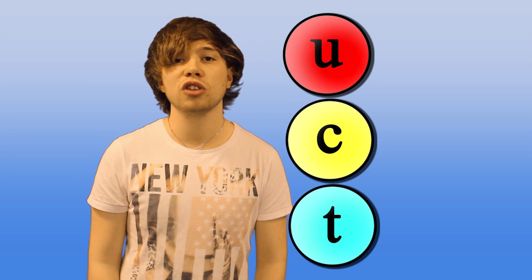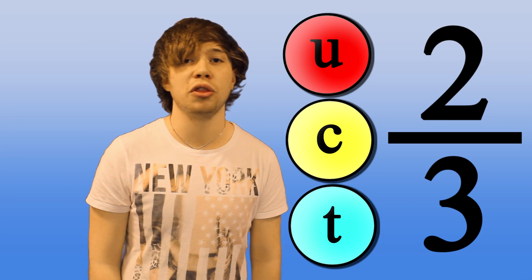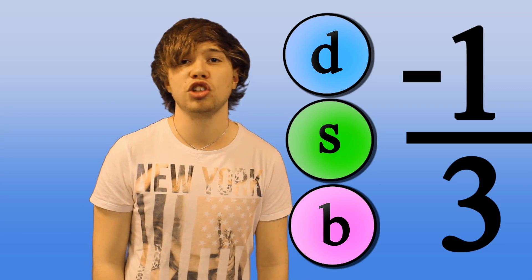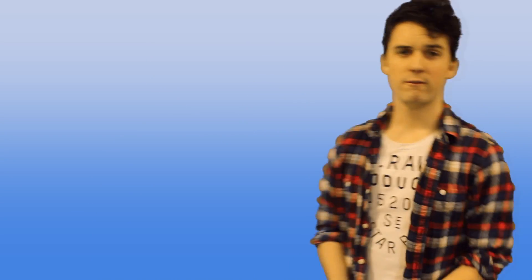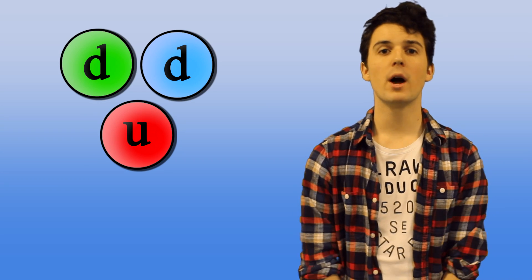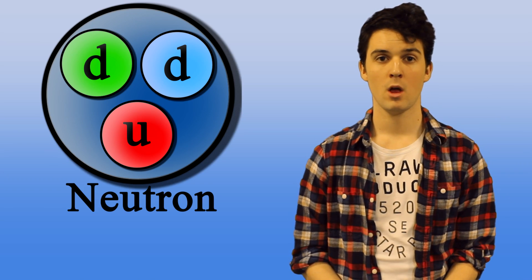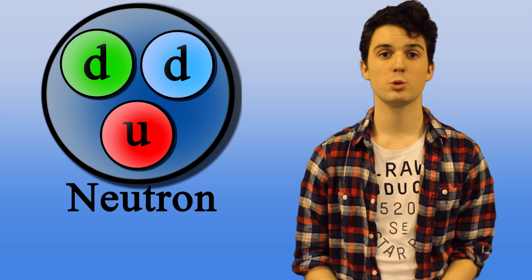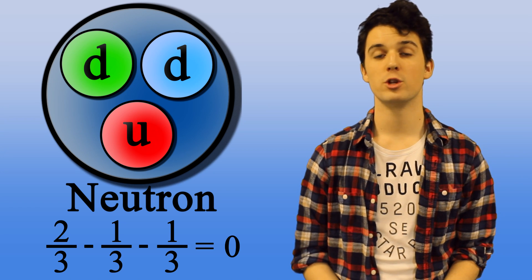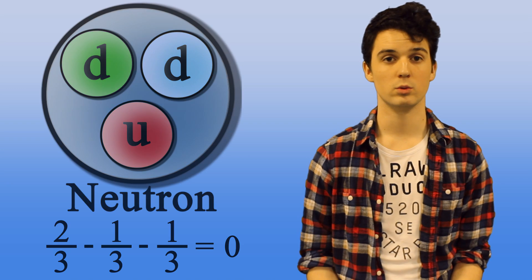One of the properties of a quark is its charge. Up, charm and top quarks all have a relative charge of two thirds. Whereas down, strange and bottom quarks have a charge of minus a third. For example, if I take one up quark and two down quarks, by combining them, they form a neutron. The individual sum of the charges of each quark is equal to zero. Therefore, the neutron has no charge at all.